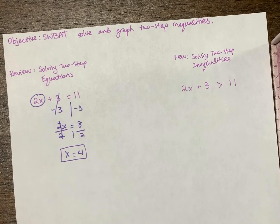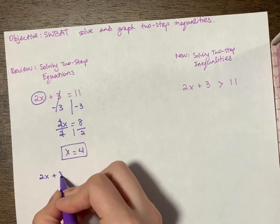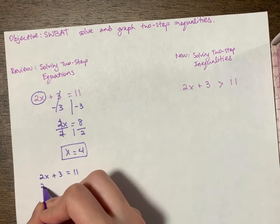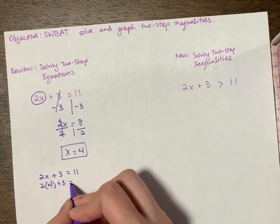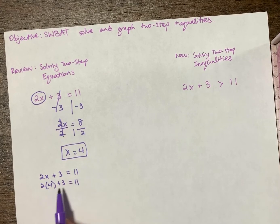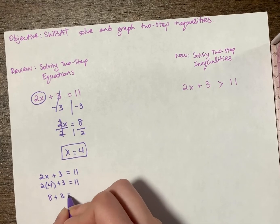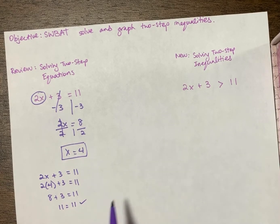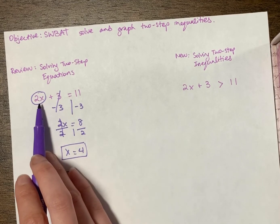Remember, we learned how to check our work. I can copy down this problem: 2x + 3 = 11, and plug four in for x. So two times four plus three equals 11. On the left side, two times four is eight, plus three equals 11. Eight plus three is 11, so 11 equals 11 — that checks out, which means my answer really was x equals four. For this equation to be true, x has to be four.